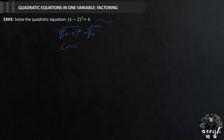This is now x minus 2 equals square root of 6. Again, by applying the square root property, we can write this as x minus 2 equals positive or negative square root of 6.